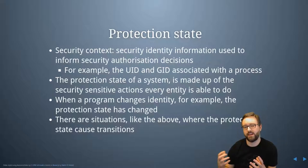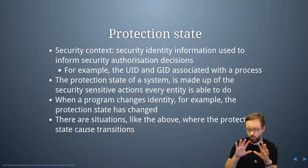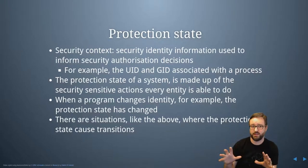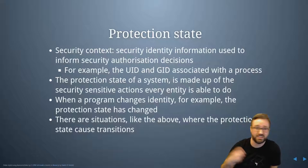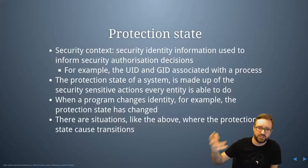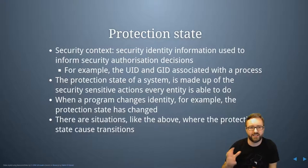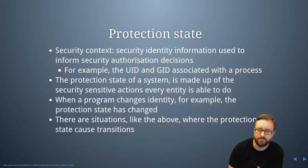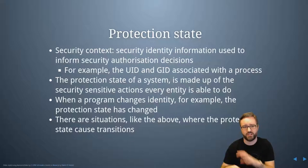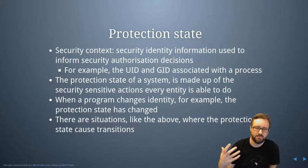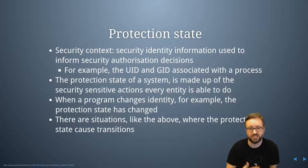You can think of the protection state as a snapshot in time of what all the security contexts are — what all the processes are running and what permissions and privileges they have at that moment. Every time something changes on the system, like a new process starting or a process getting extra privileges, that causes a transition to a new protection state or a new set of security policies that apply. On a running system, protection states are continuously changing as programs start, security contexts update, processes stop, or new processes are created.